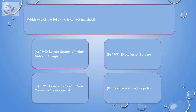Question: Which one of the following is correctly matched? A. 1940 – Lahore Session of Indian National Congress. B. 1931 – Execution of Rajguru. C. 1921 – Commencement of non-cooperation movement. D. 1920 – Rowlatt Satyagraha.